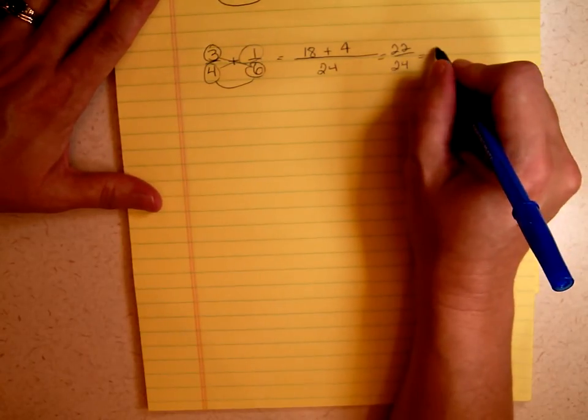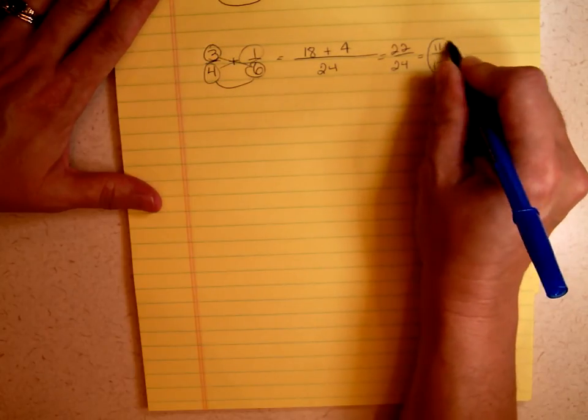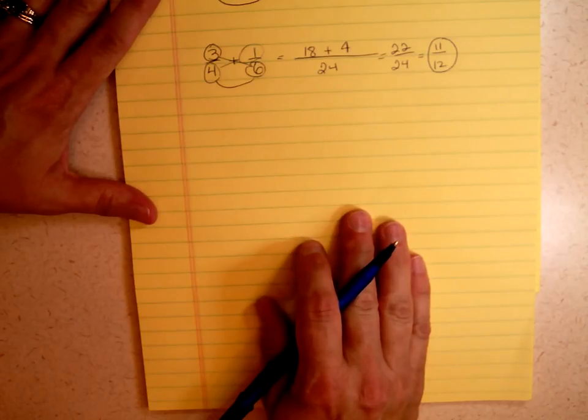So 22 divided by 2 is 11, and 24 divided by 2 is 12. So my answer is 11 over 12. And again, this works every single time.